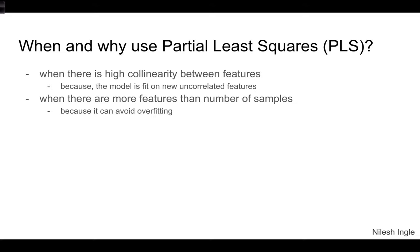When and why would we use partial least squares? As already mentioned, if the features are correlated — for example if we have features one, two, and three that are correlated — we would usually remove two of those three before inputting to a model. However with PLS we can use all three features. It's also applicable when the number of features is more than the number of samples, i.e., a wide dataset where columns outnumber rows.